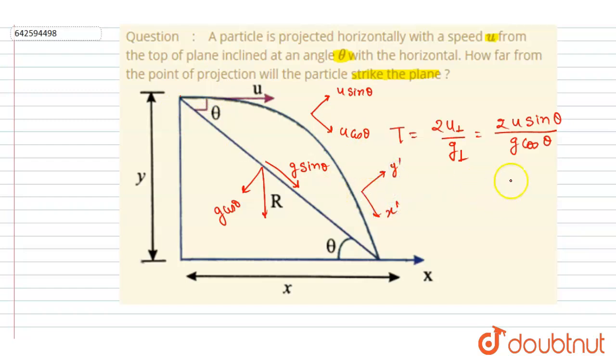Simple. We got the time of flight, which means that if the particle is projected at t equals zero, it will strike here at t equals capital T, which is equals to 2u sin theta by g cos theta, that is 2u by g tan theta.